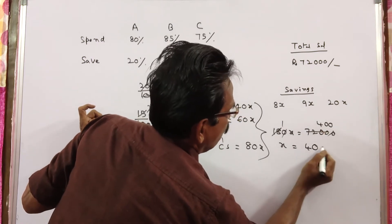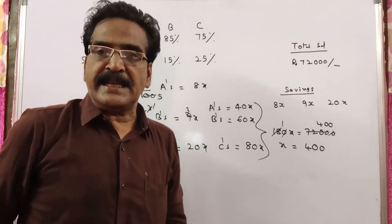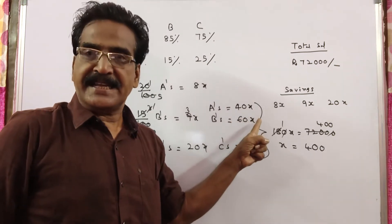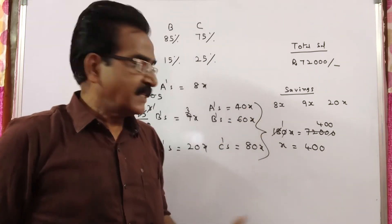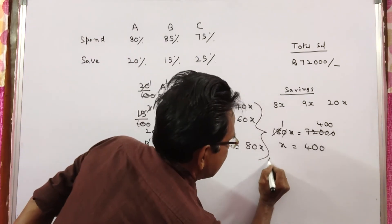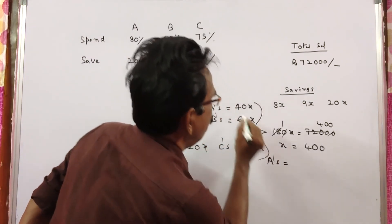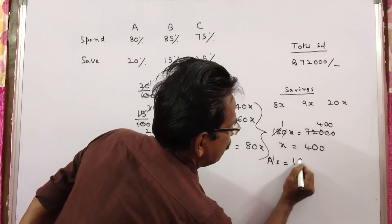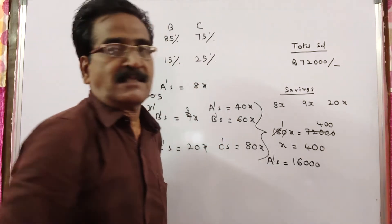Now we want the salary of A. A's salary is 40x, 40x into 400. 16,000 is A's salary, friends. A's salary is equal to 40 times 400. 16,000 is your answer, friends.